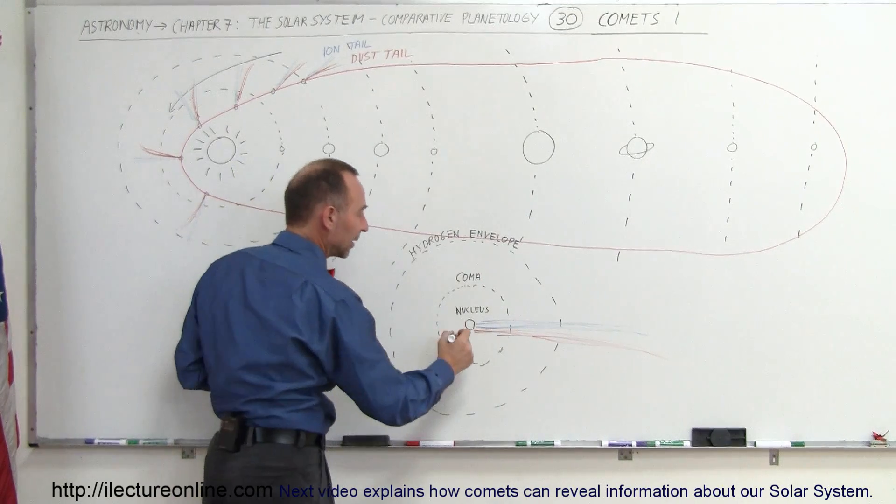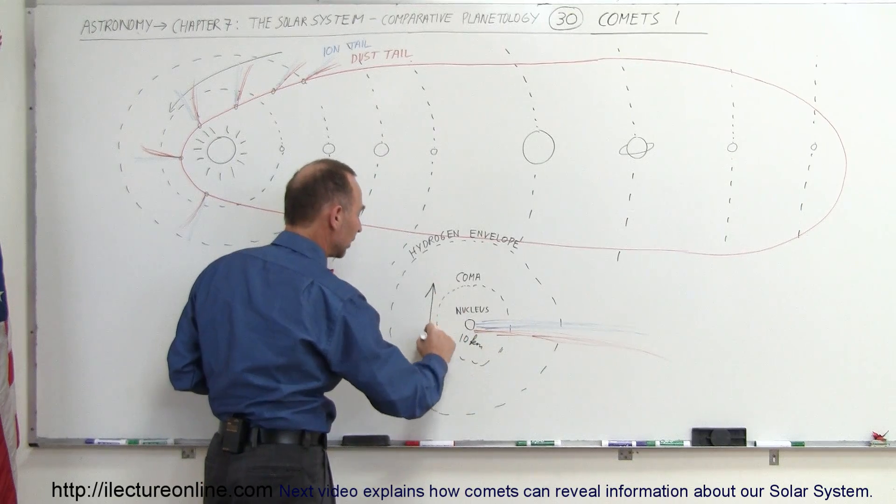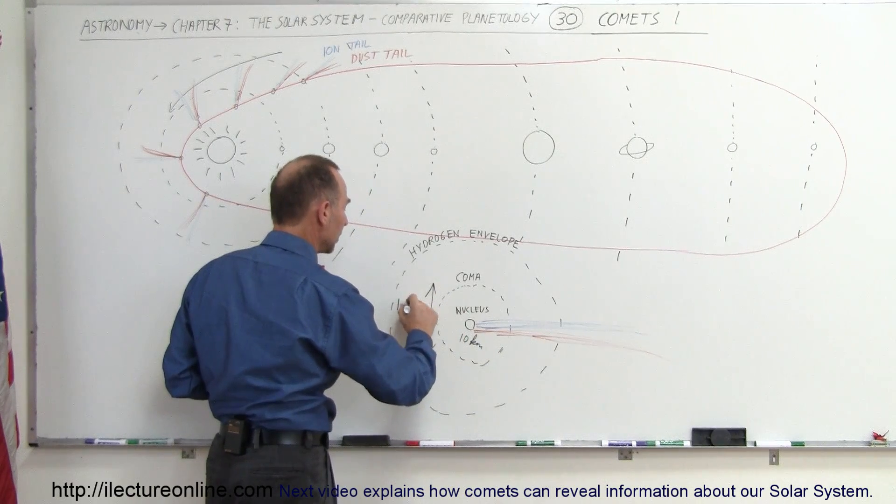If the nucleus is only about 10 kilometers across or so, the coma can be as much as a million kilometers across.